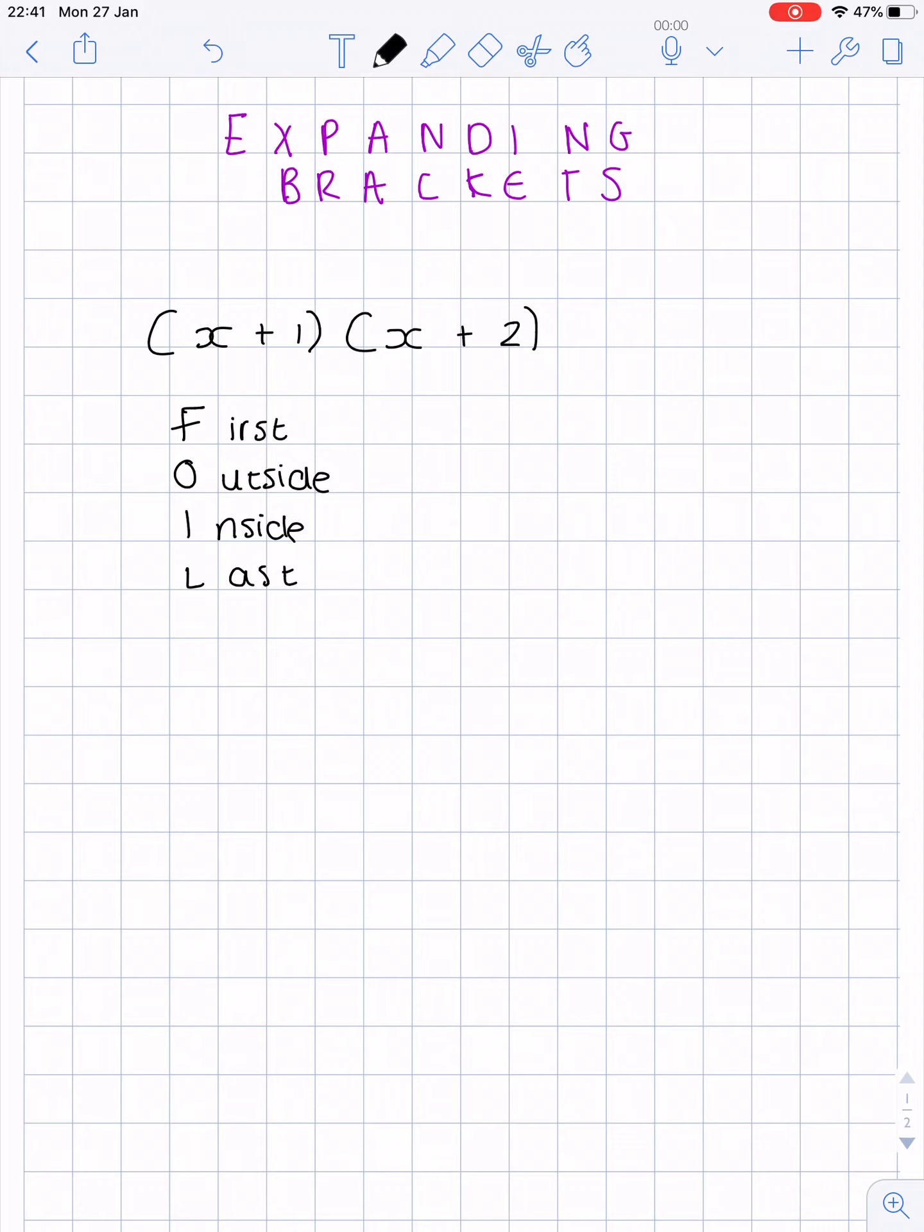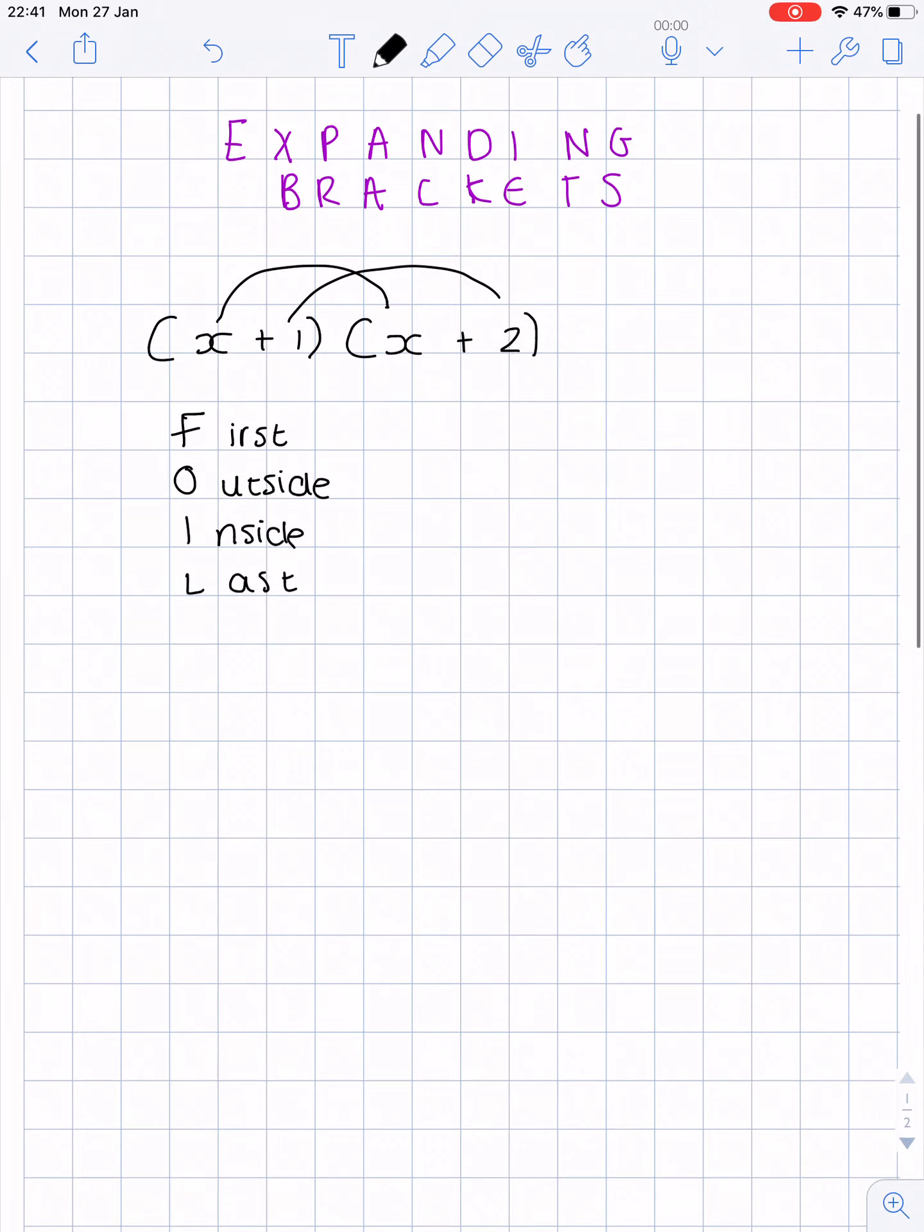So we start with the outside. What we do is we multiply x by x and 1 times 2. Then we'd get x squared as x times x is x squared, just like 5 times 5 would be 5 squared, and we'd have 2 times 1 which is 2.